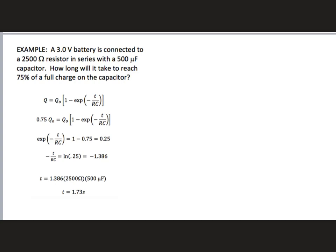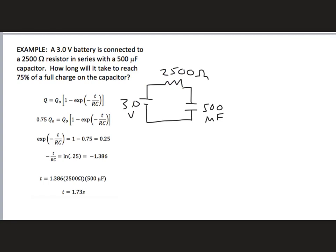Let's look at an example: a 3-volt battery connected to a 2500-ohm resistor in series with a 500-microfarad capacitor. The question is: how long will it take to reach 75% of a full charge? We use the formula for charging: Q = Q₀(1 − e^(−t/RC)), where Q₀ is the maximum charge when fully charged. When the capacitor is 75% charged, Q = 0.75 Q₀.